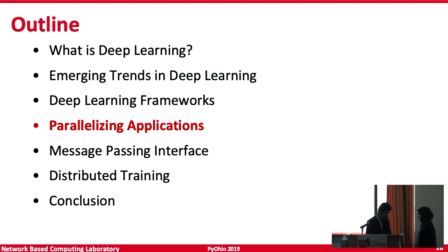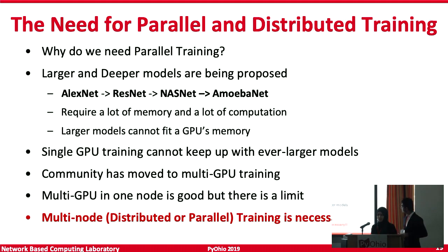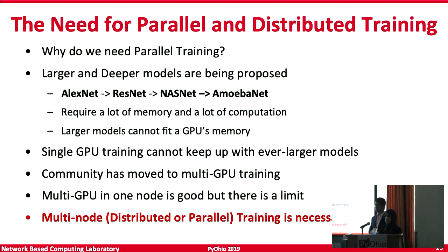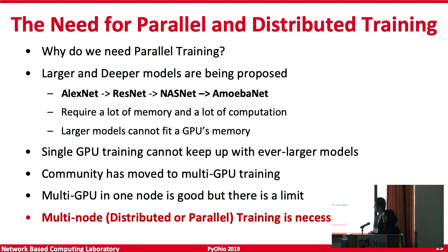Why do we need to parallelize applications, specifically in deep learning? Since it takes a lot of time and requires a lot of resources, being able to parallelize means a lot of work can be done in much less time. Larger and deeper models are being proposed over time — from AlexNet to ResNet, NASNet — going from about seven layers to thousands of layers. These require memory and computation that may not be sustained by just one machine, so having multiple GPUs lets you execute processes simultaneously.